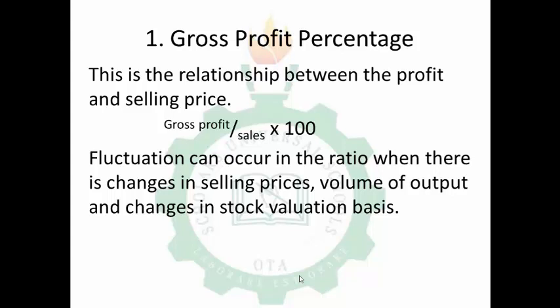Things that could cause changes in the gross profit percentage ratio include: changes in selling prices, volume of output, and changes in stock valuation basis. For example, most businesses made fewer sales in 2020 compared to 2019 because of the COVID-19 pandemic, which caused lockdowns for days if not months. Companies expected to make more sales during that period were particularly affected, and their gross profit percentage would drop.